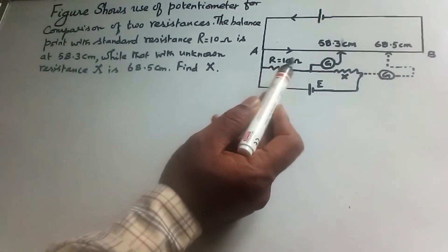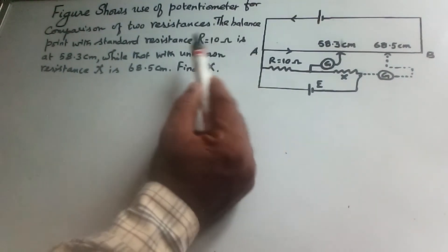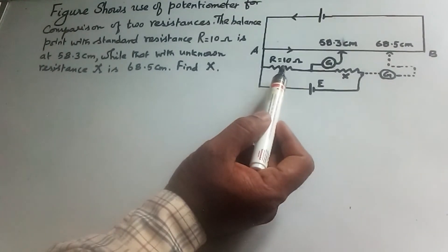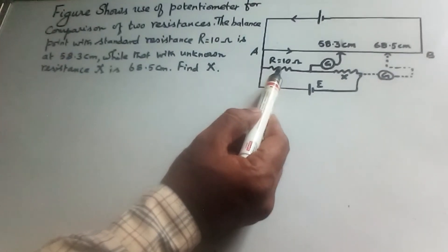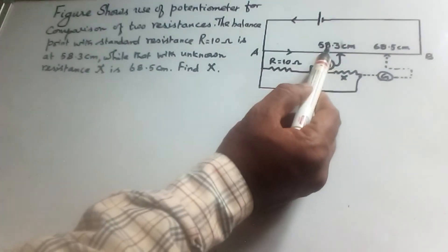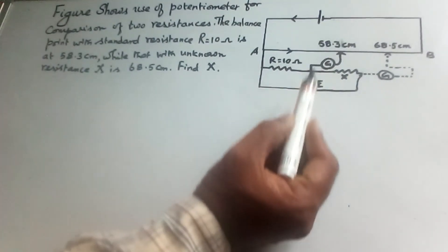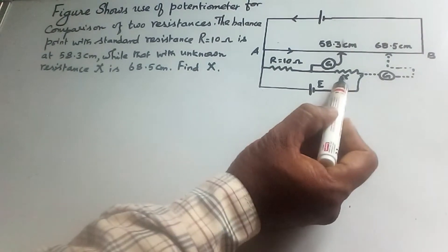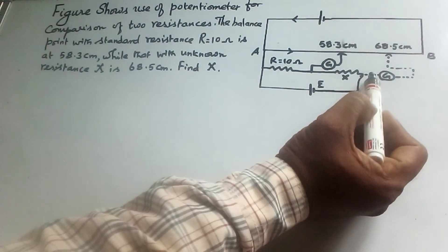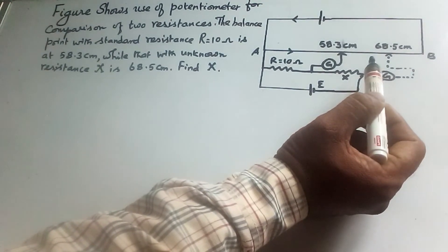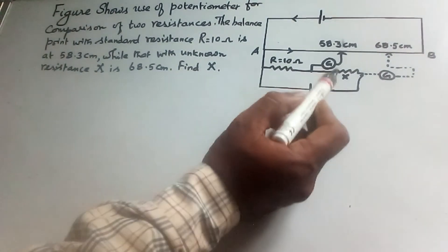Here shows use of potentiometer for comparison of two resistances. The balance point with standard resistance r equal to 10 ohm is at 58.3 centimeter, while that with unknown resistance x is 68.5 centimeter. We have to find the unknown resistance x.